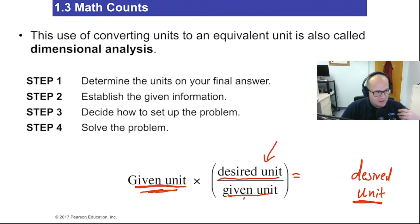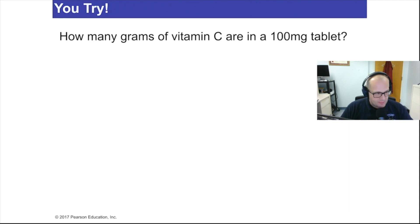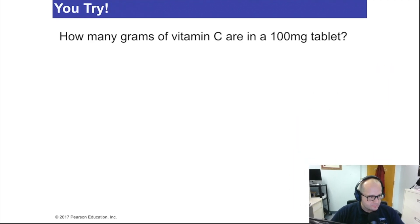It takes practice to kind of get the confidence to do this, but it's always the same. Given unit or where you're starting is always written in the denominator of the conversion factor. Where you want to get to, or the unit that you're needing to convert to, always goes in the numerator of the conversion factor. And it will always work. It's so simple, guys. Let's see an example. How many grams of vitamin C are in a 100 milligram tablet?